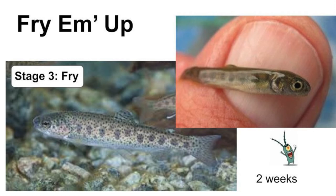Buttoning up occurs when alevin absorb their yolk sac and begin to feed on zooplankton. At this stage, the trout are called fry. Fry swim close to the water surface, allowing their swim bladder to fill with air, which also helps them float through the water. They stay in this stage for about two weeks.